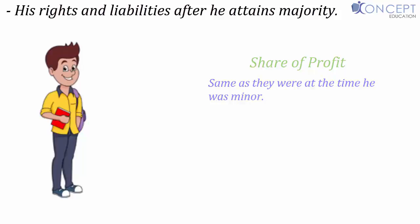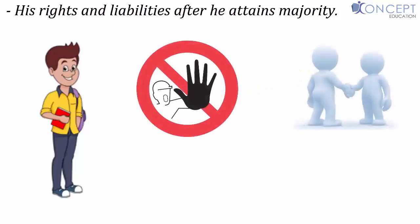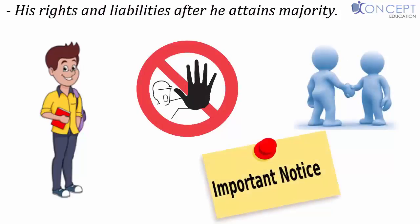If he does not elect to become a partner, he must give a public notice of that decision. Without that notice, he would be considered a partner and liable for all debts of the firm since his admission to the benefits. To avoid that situation, he must publicly declare that upon becoming a major he does not wish to join the firm. By doing so, he will not be liable for any debts of the firm.